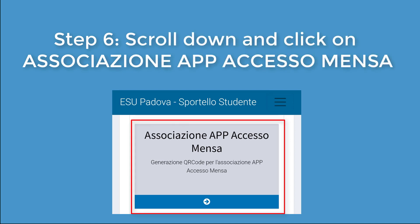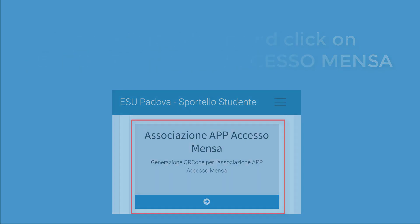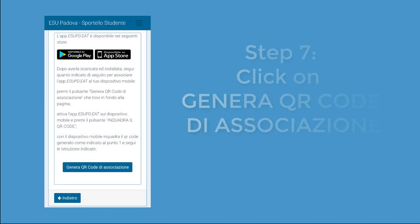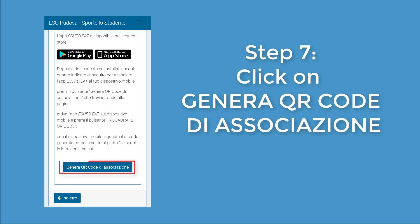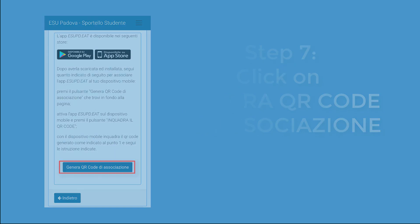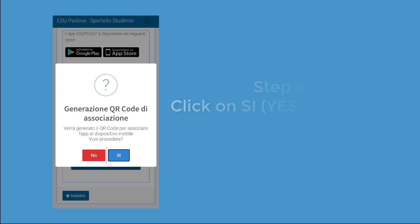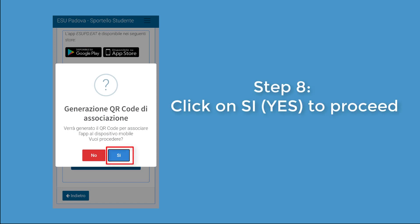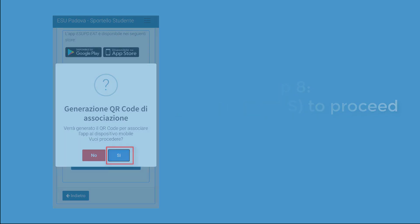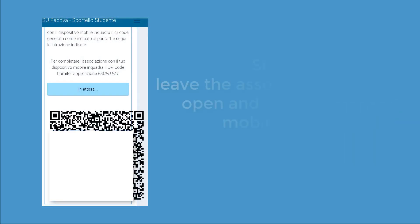Scroll down until you find Associazione app, which relates to Mensa, and click on it. Click on Genera QR code di associazione, then click Yes to confirm. The association QR code will be generated immediately. Scroll the page to view it if necessary.